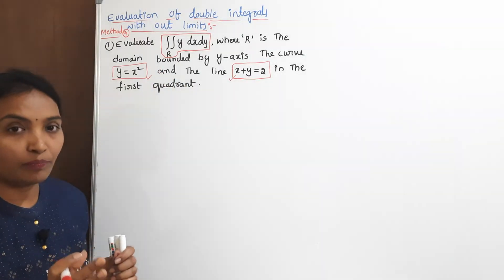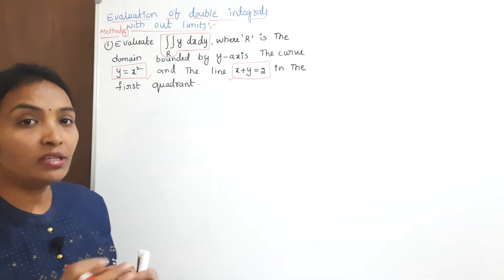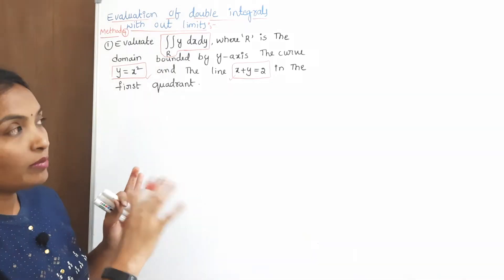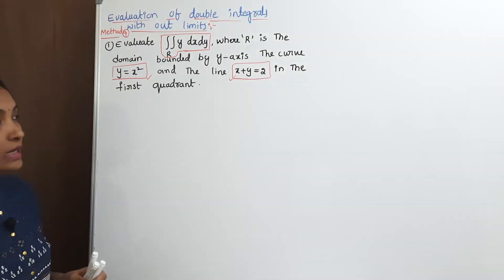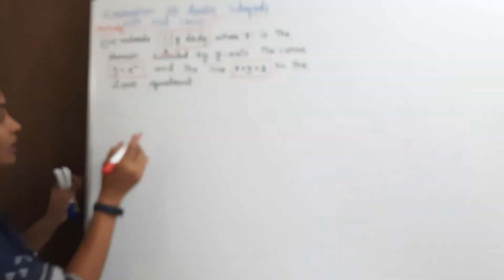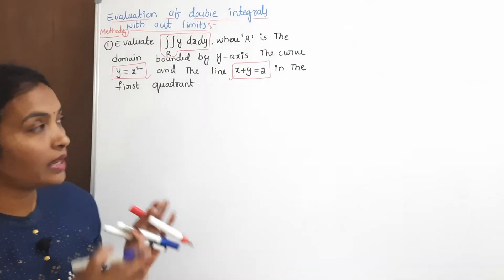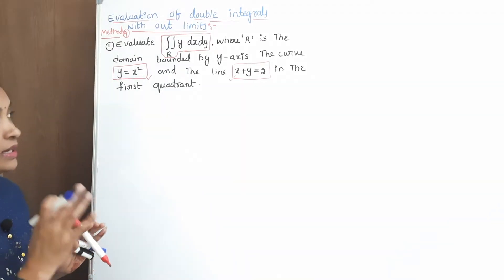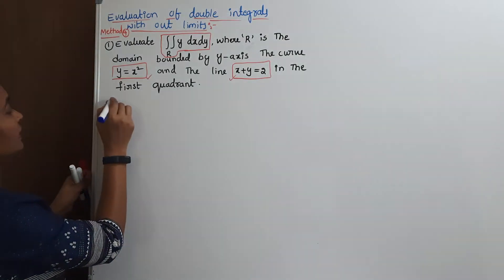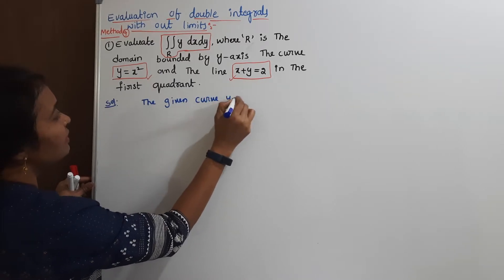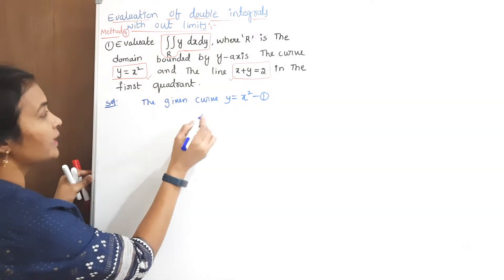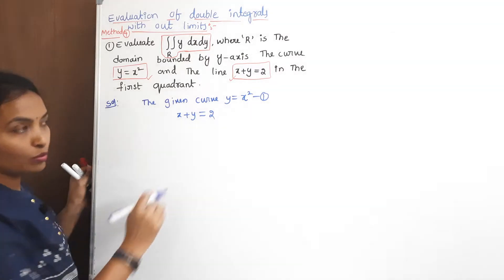These are the given two curves. In our previous problem, direct parabolas were given and we put those parabolas along with the x and y axis to get the graph directly. But here that is not possible. For that, I want to draw the graph. First, I have to read the problem carefully. The first curve is y equals x squared, and the second is the line equation x plus y equals 2.